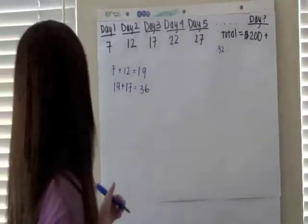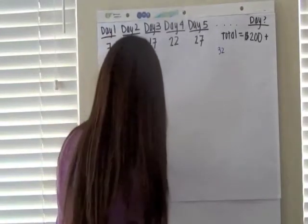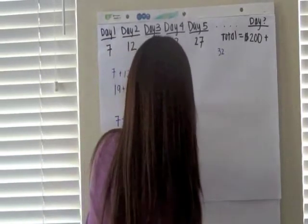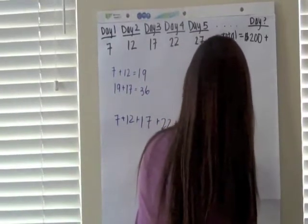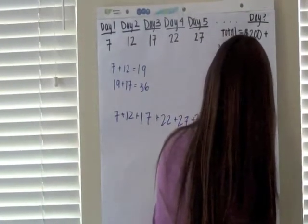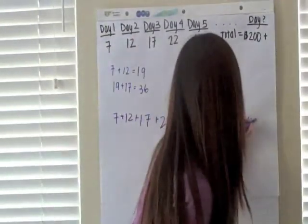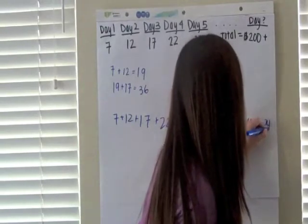I did this problem before, and I got 7 plus 12 plus 17 plus 22 plus 27 plus 32 plus 37 plus 42 plus 47 equals 243.